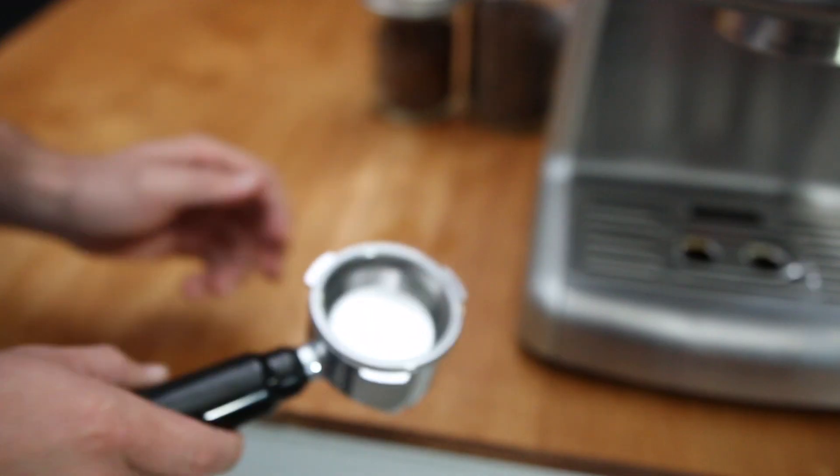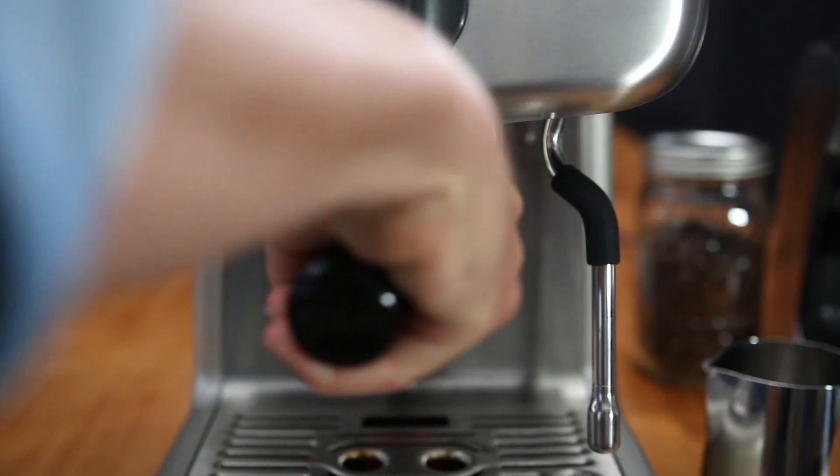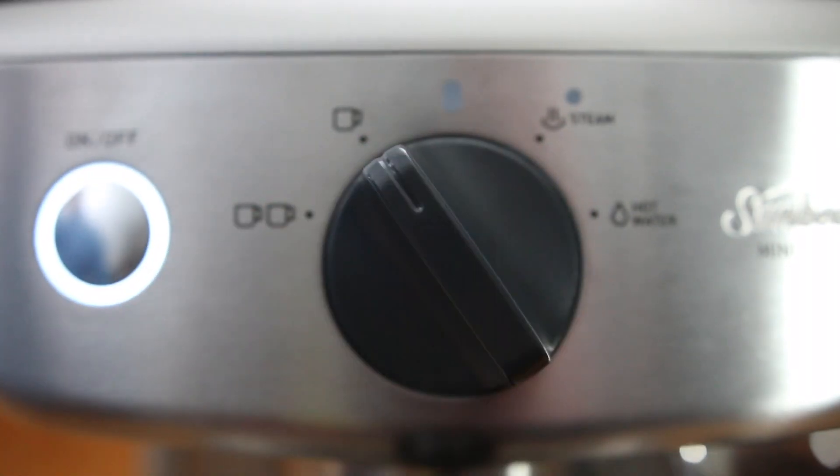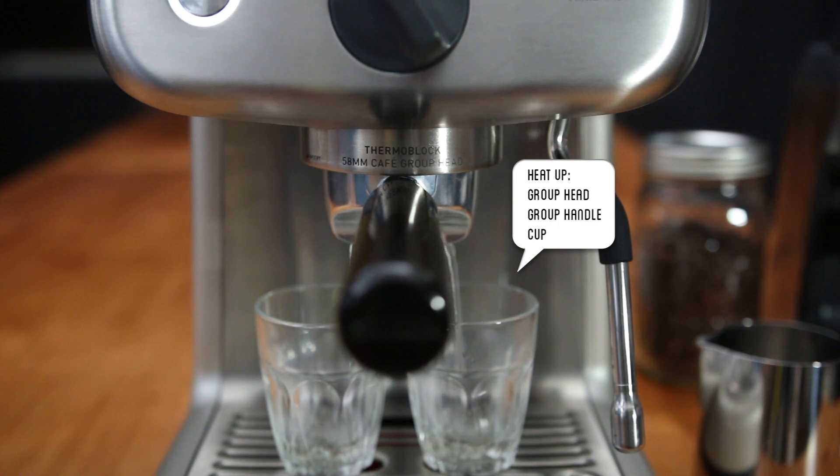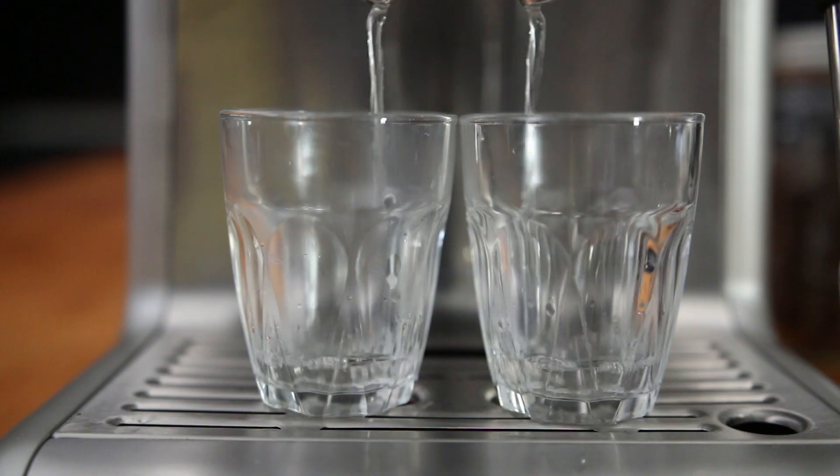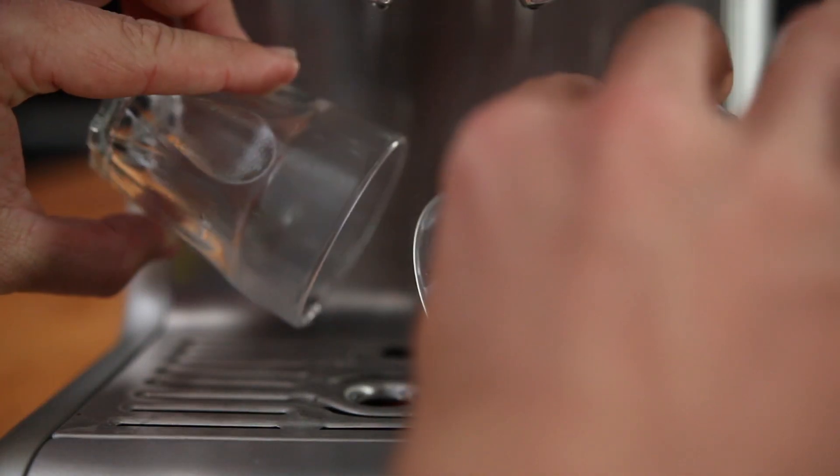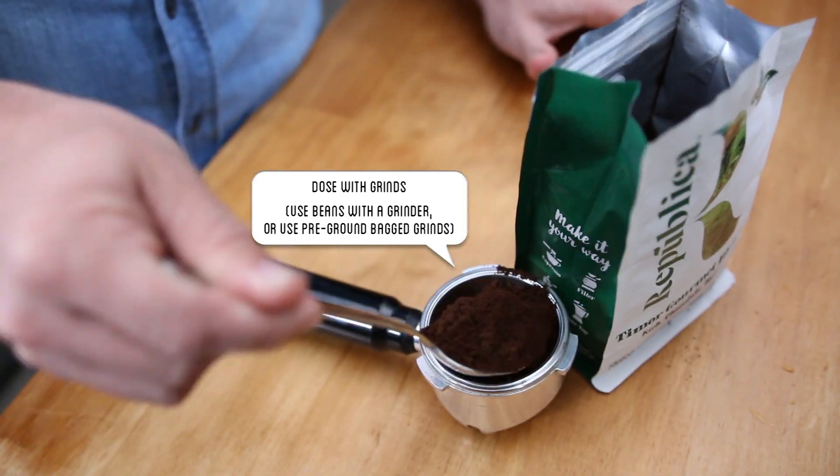Take your group handle with your preferred filter basket. Turn the dial to run a little water to heat up the group handle and your cups. Empty your cups and the group handle then fill up to the top with your ground coffee.